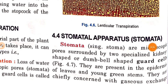Now let's discuss the stomatal apparatus, or stomata. The singular term is 'stoma' for one opening. Stomata are microscopic pores surrounded by two specialized kidney-shaped or dumbbell-shaped guard cells. They are present in the epidermis of leaves and young green stems.